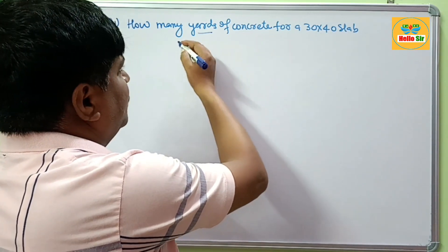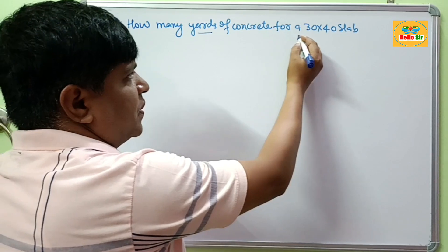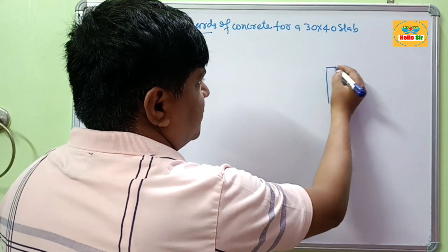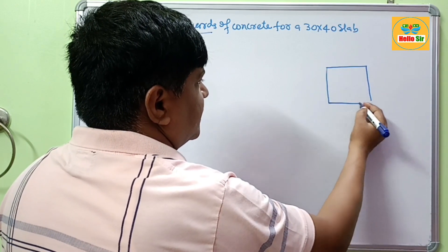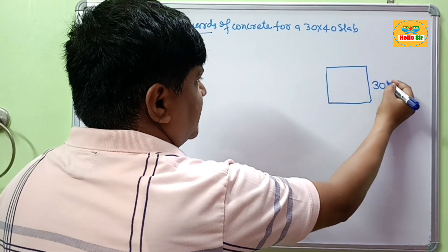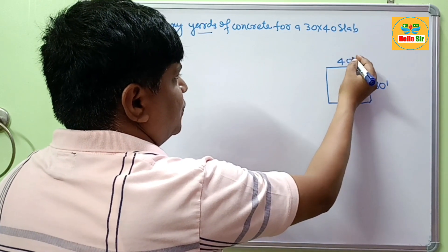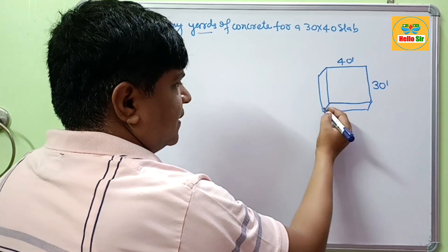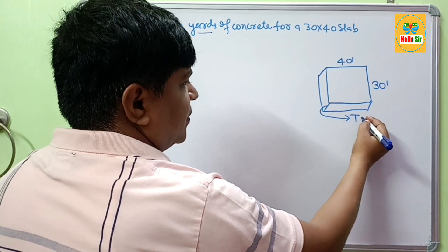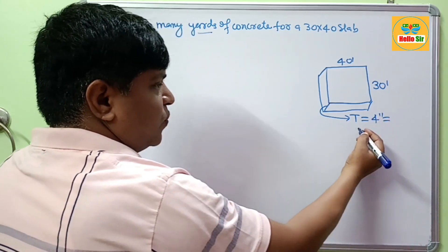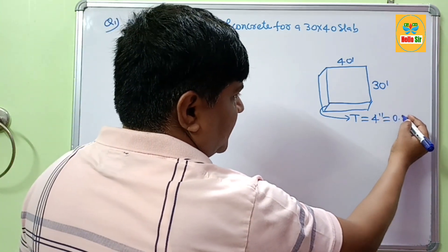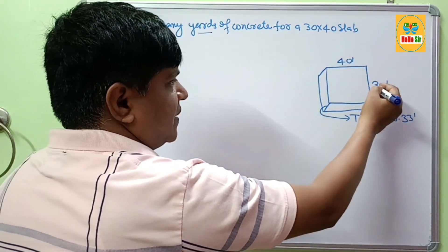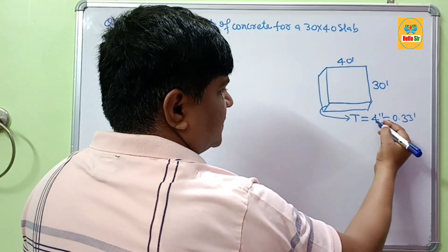It means how much quantity of concrete is required for a 30 by 40 slab. Suppose you have a slab with dimensions 30 feet by 40 feet and thickness of 4 inches, which equals 0.33 feet.